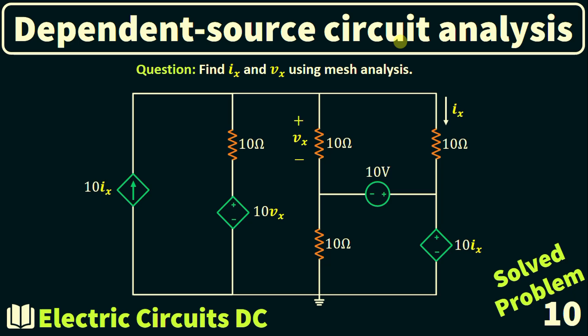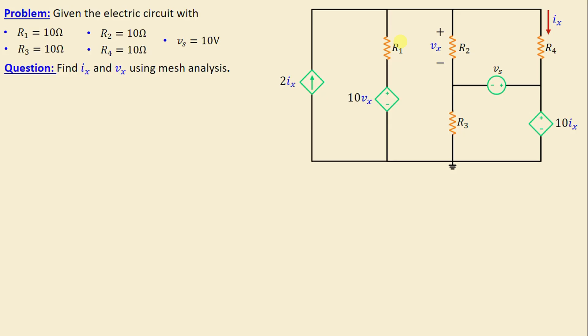Greetings, welcome to this new video about dependent source circuit analysis. We will solve problem number 10. Let's consider this network consisting of four resistors labeled R1 through R4, along with one independent voltage source Vs. We can also observe the presence of dependent sources: a current-controlled current source, a voltage-controlled voltage source, and a current-controlled voltage source.